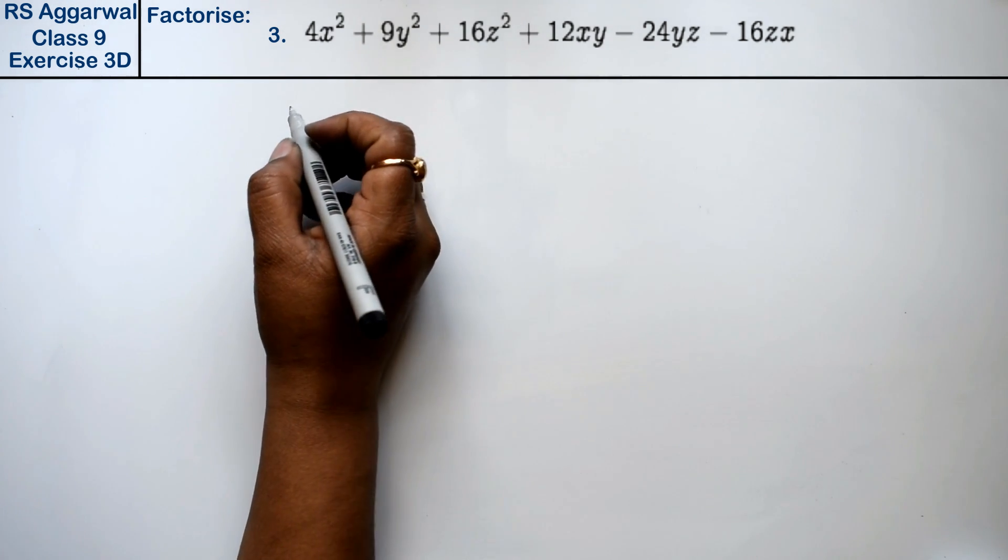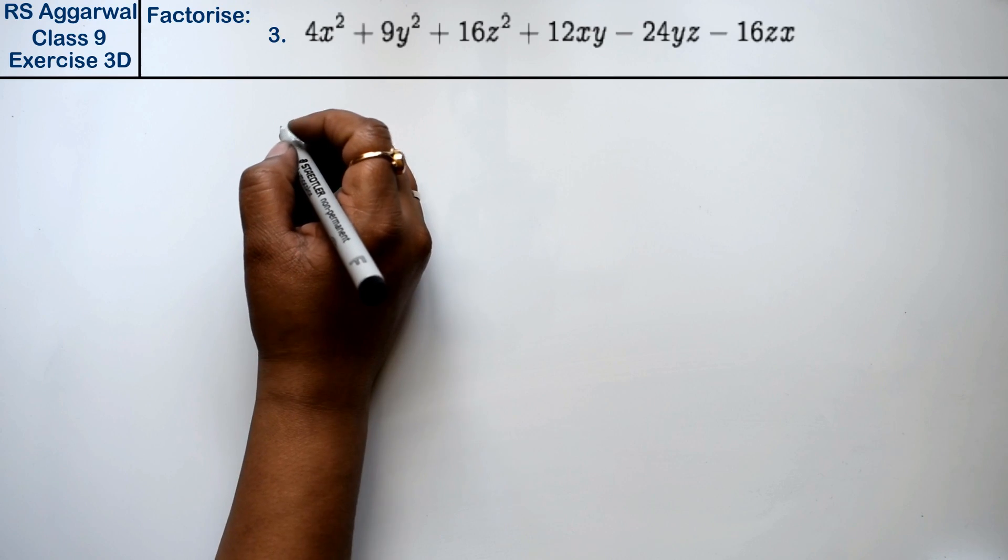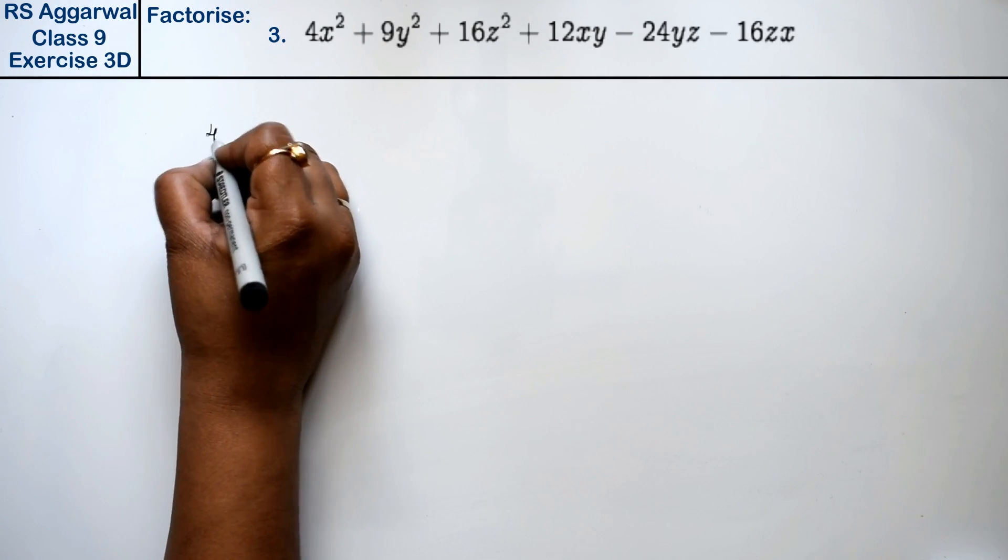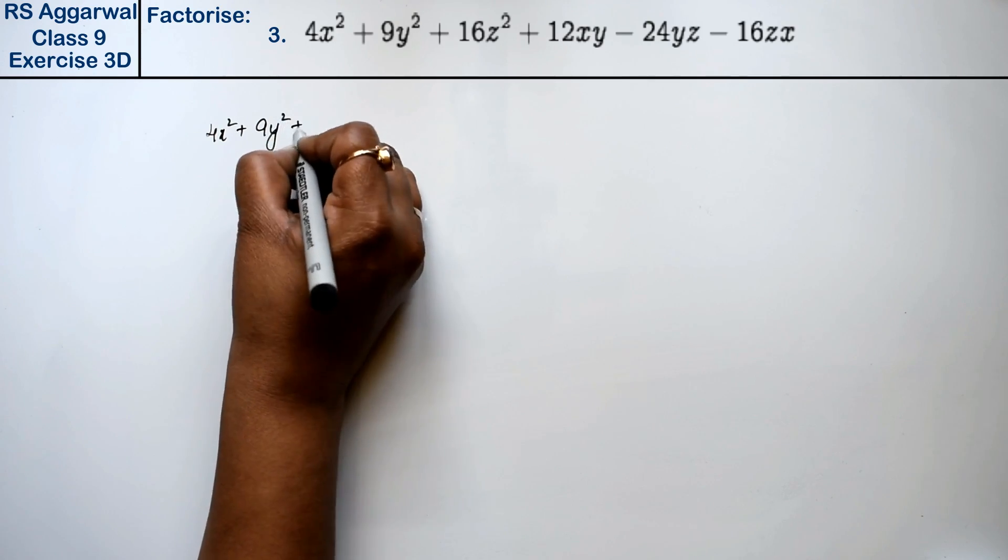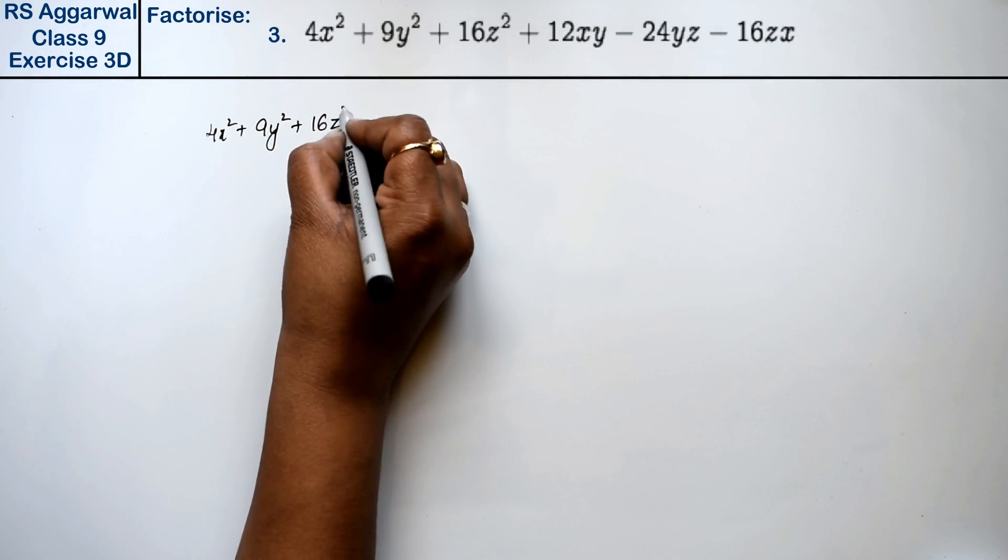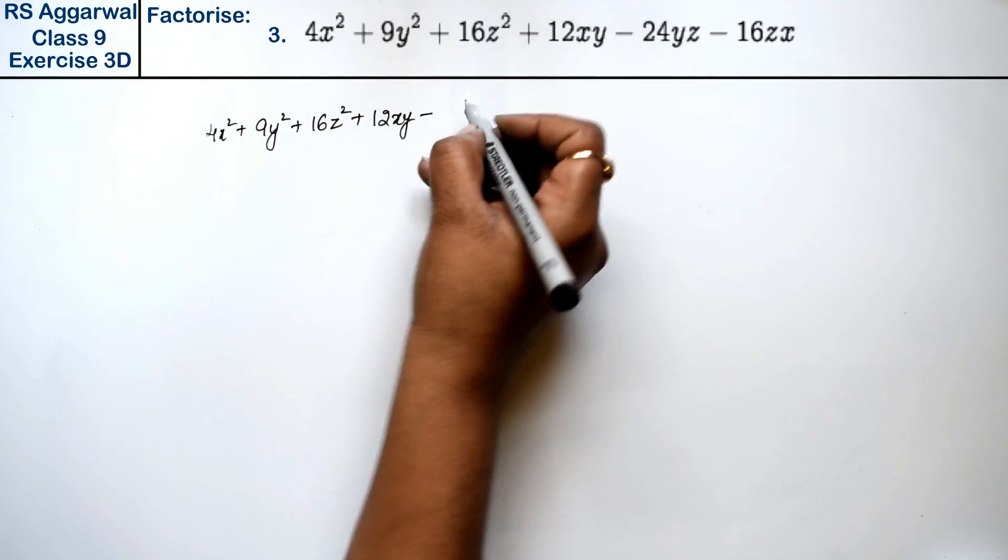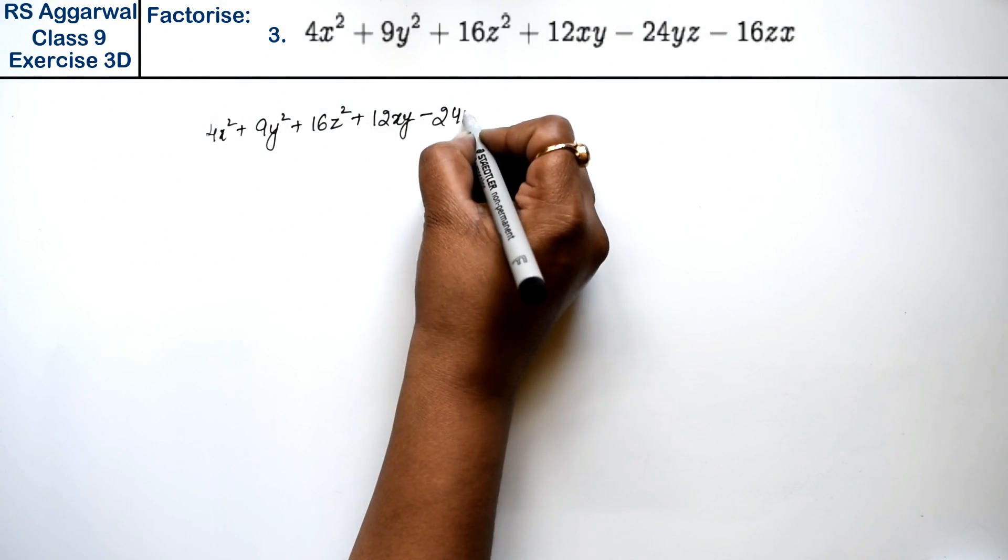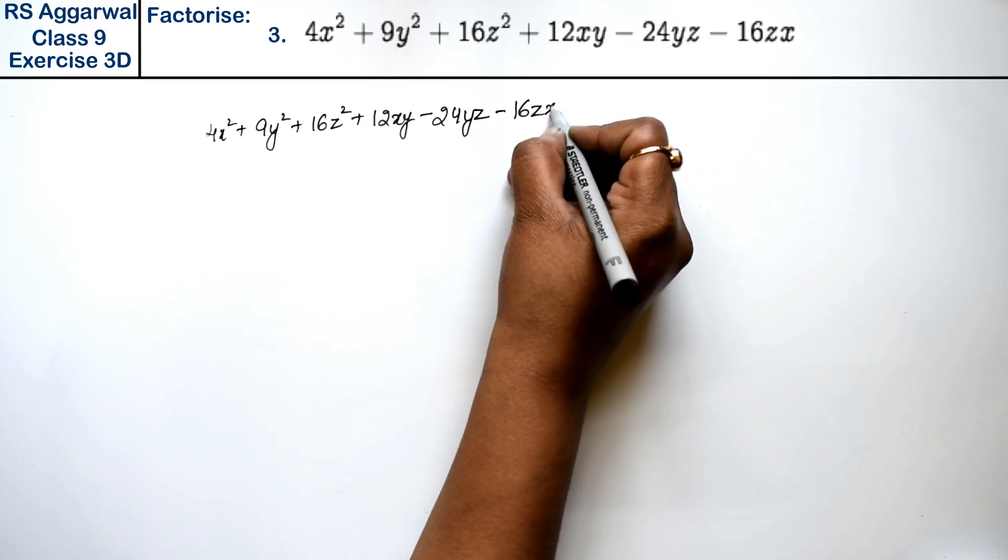Let's do question number third of exercise 3D, that is factorization of polynomial. Question number third is 4x² + 9y² + 16z² + 12xy - 24yz - 16zx.